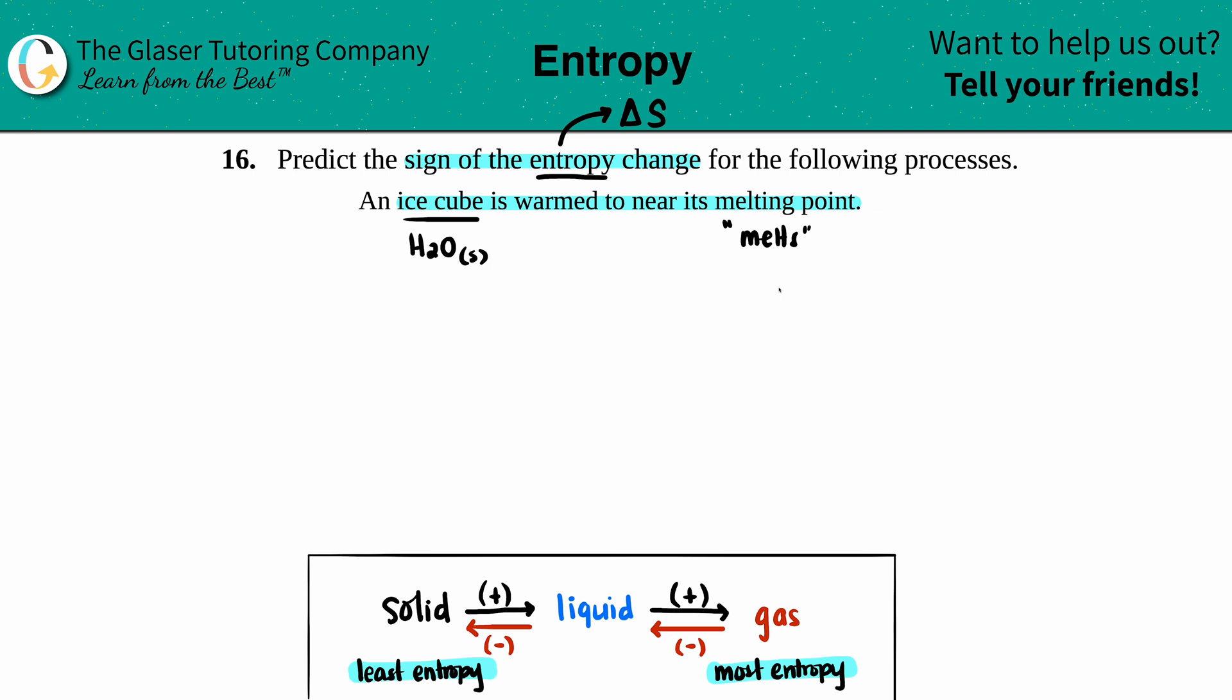And what state would the water, the H2O, be when it's melting? Yeah, it's going to turn into a liquid. So in this case we have a scenario in which H2O solid is going to, or very close to, near H2O liquid.